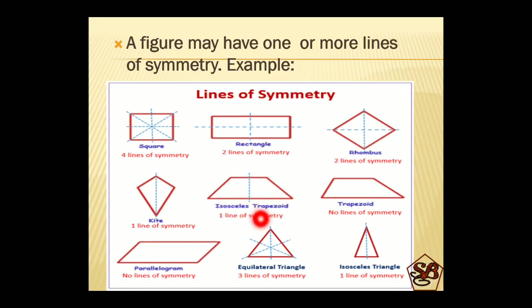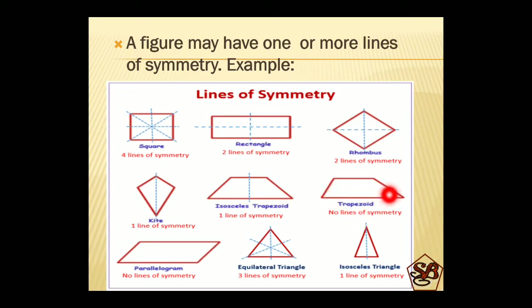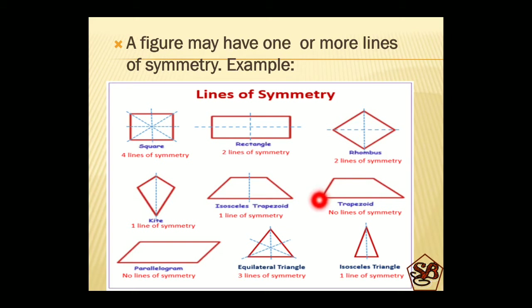An isosceles trapezoid is the one which has two sides equal. This is another type of trapezoid where one side is longer than the left side, so this figure does not have any line of symmetry. Such types of figures are called asymmetrical figures.